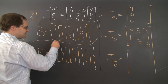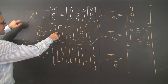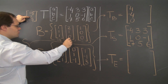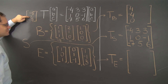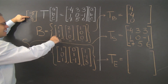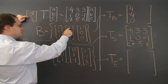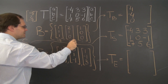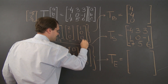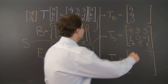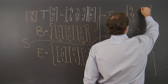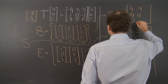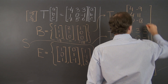We need -9 of the third basis element, giving -9 in that position. We need to get up to 2 in the second entry, so 11 of the second. In the first entry we now have -9 plus 22 = 13, and we need to get to -5, so -18 of the first. The coefficients for column 2 are (-18, 11, -9).